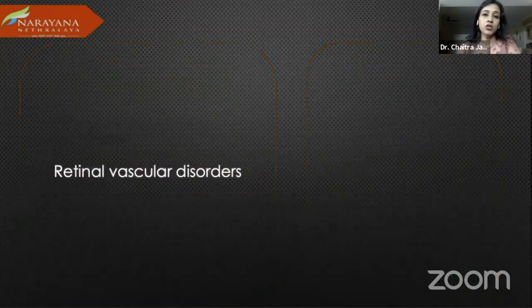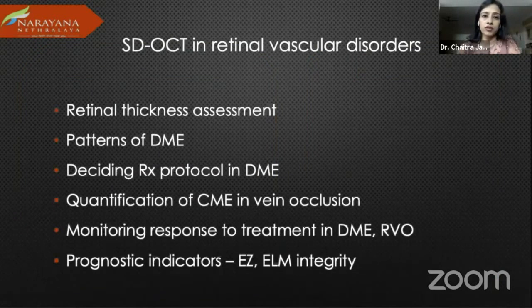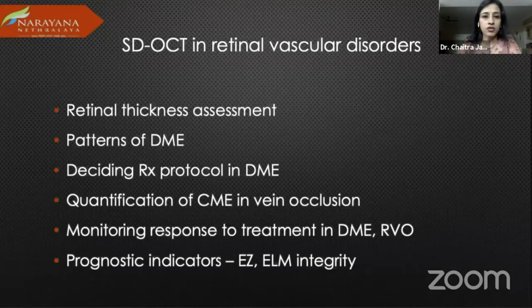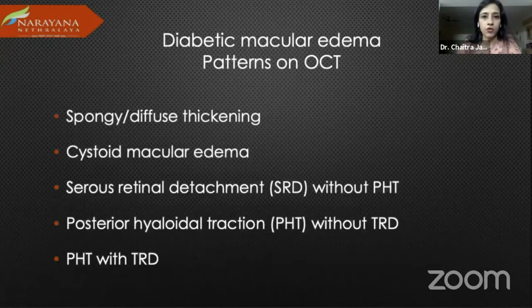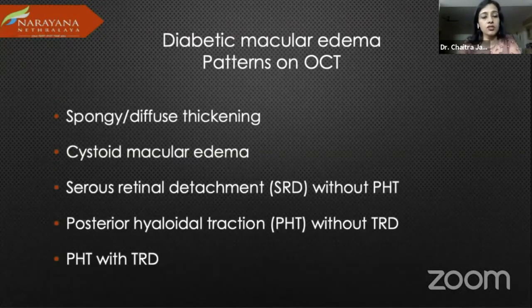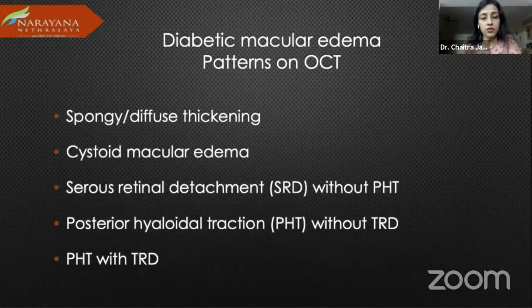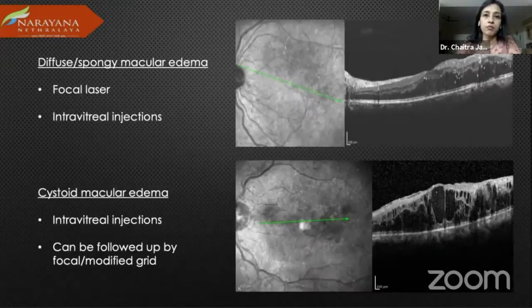Going on to retinal vascular disorders — OCT is extremely important for thickness assessment, patterns of DME, deciding the treatment protocol for DME, quantification of CME in vein occlusions, monitoring response to treatment, and prognosticating whether treatment is going to help. The OCT classification for DME includes spongy, cystoid, subretinal fluid, and whether there is a tractional component — all extremely important for medical or surgical treatment decisions.